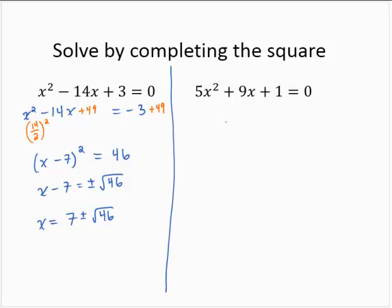Let's look at another example. 5x squared plus 9x plus 1 equals 0. And so the first thing I'm going to do is subtract the 1. So I have 5x squared plus 9x is equal to negative 1.